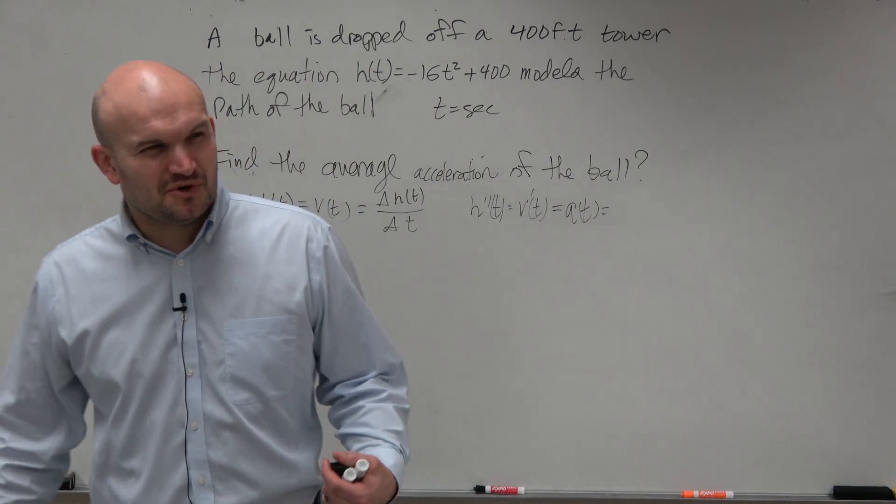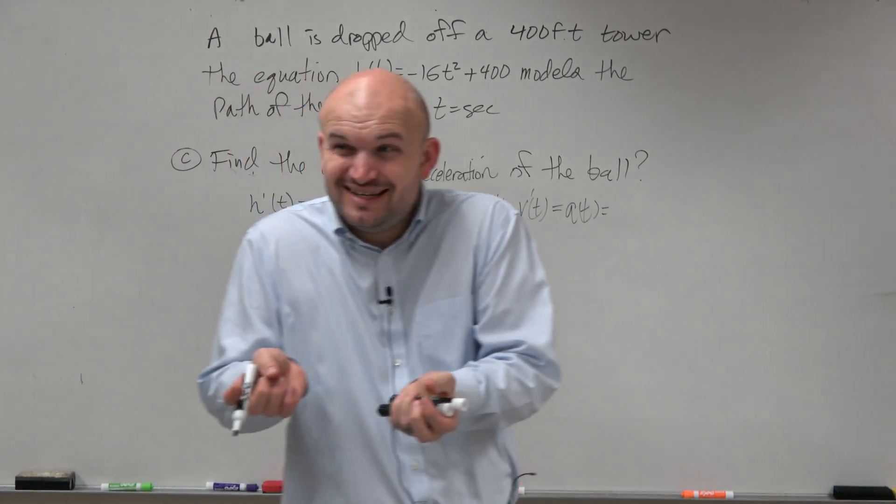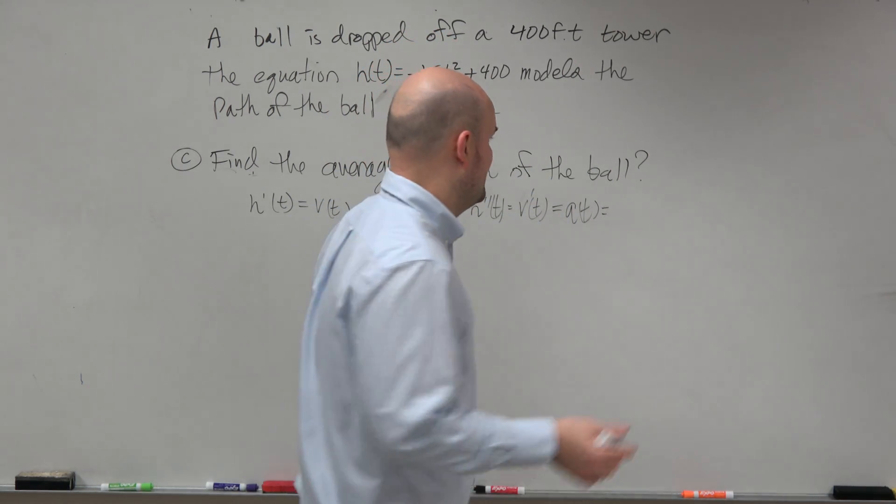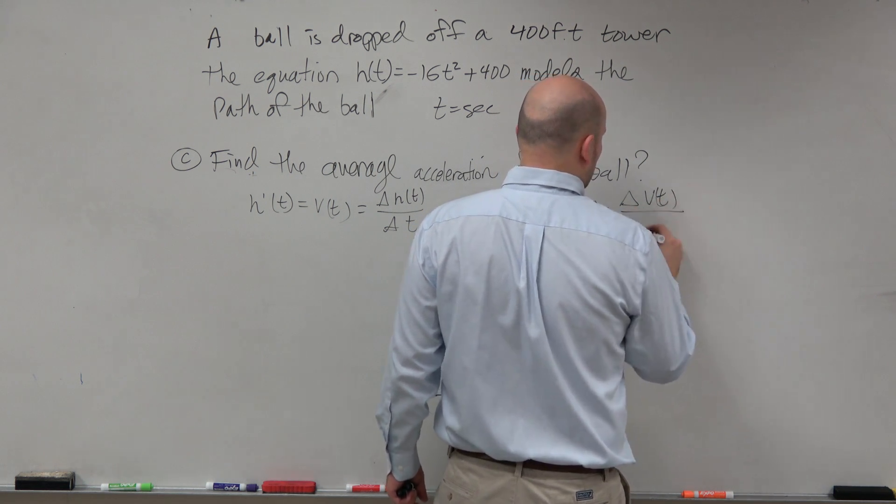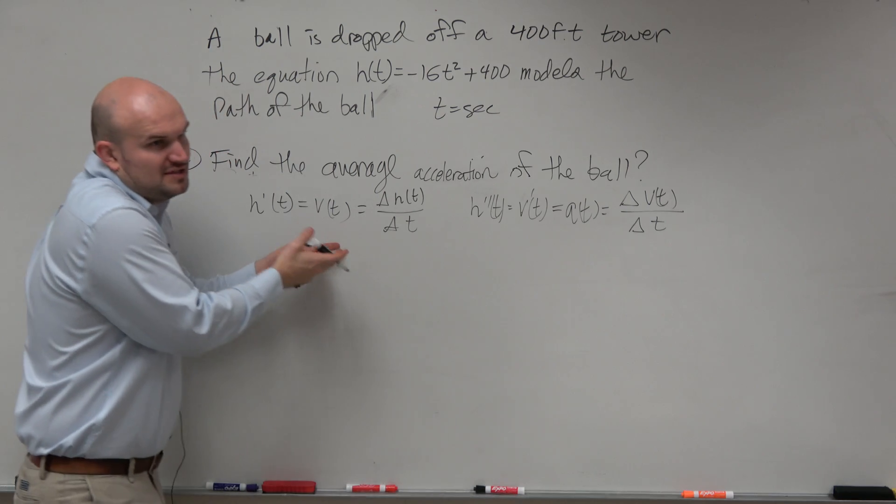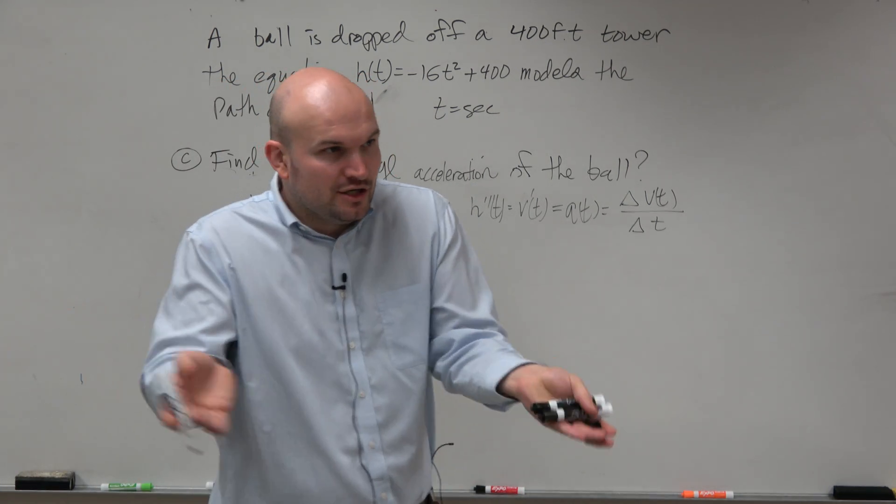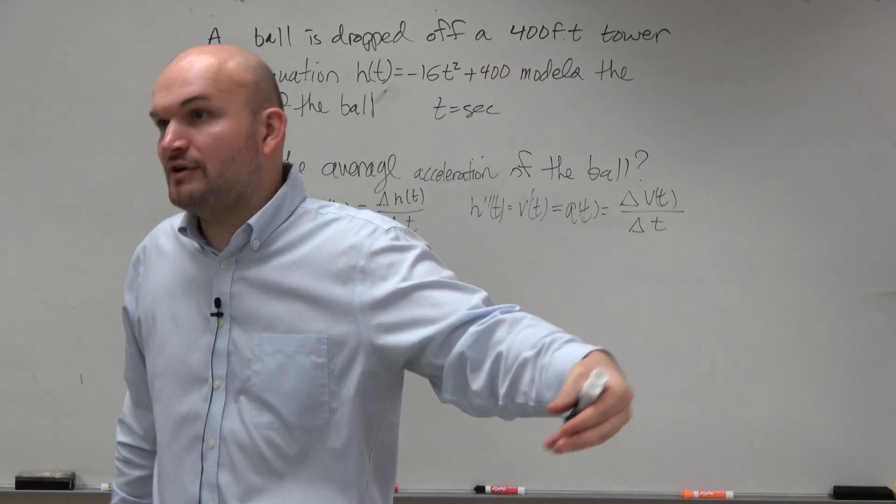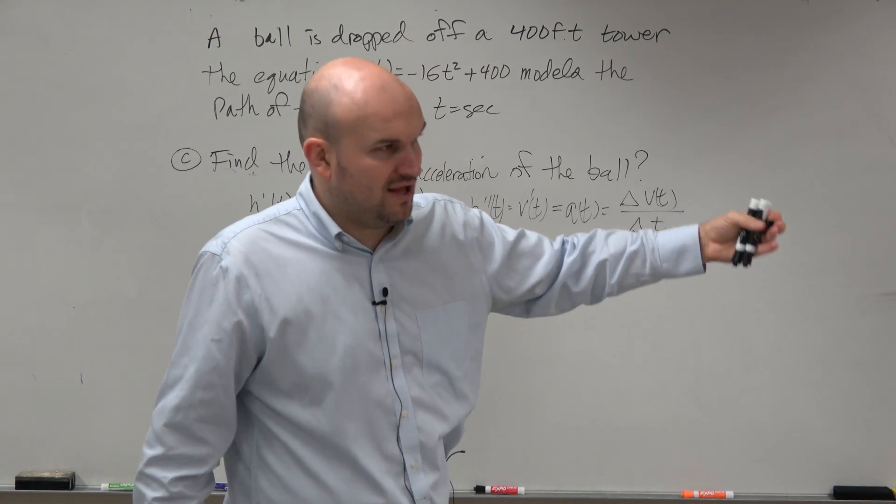What we're looking for is the acceleration, which is the slope. Remember, acceleration is the change in velocity over time. We're not looking for how the ball is changing, we're looking for how the velocity is changing. The second derivative is how the slope of the derivative graph is changing. So when talking about acceleration, how is the slope of the velocity graph changing?